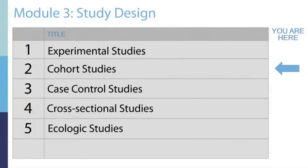Cohort studies are a type of observational study. We would like you to learn this study design particularly well. The cohort study provides the foundation for understanding other types of observational study designs. With the cohort study design, researchers follow an at-risk study population over time, evaluate exposures, and determine the subsequent risk or rate of disease or health outcome.